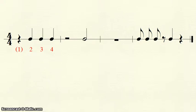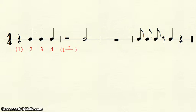We now see a half rest, which gets 2 beats. Therefore we write a 1, a line, and put a 2 on the line. And as it is a rest, we put the whole thing in parentheses. We now have a half note, so we write the next beat, 3, a line, and a 4 on the line.